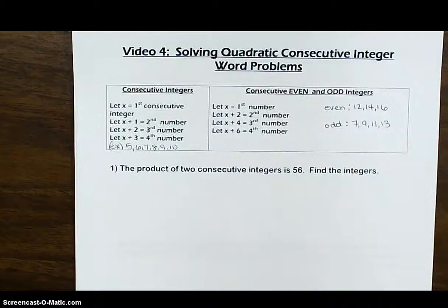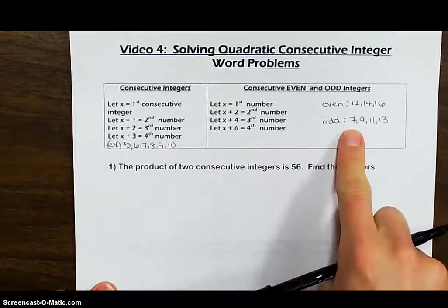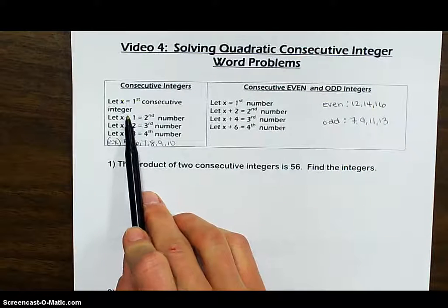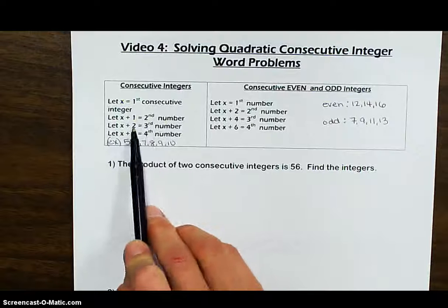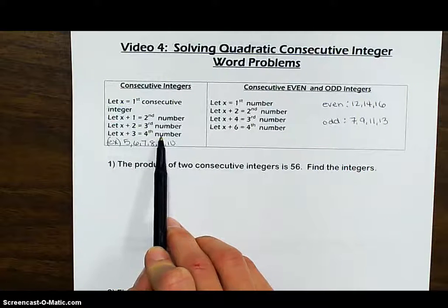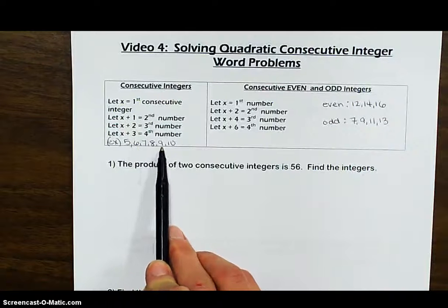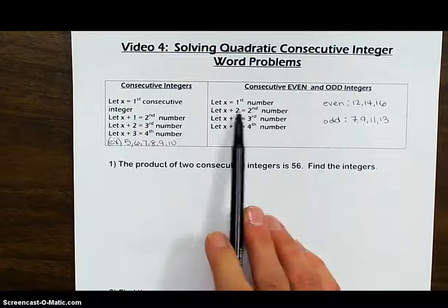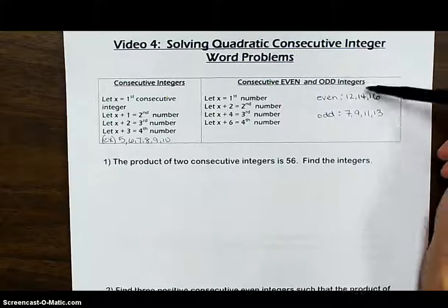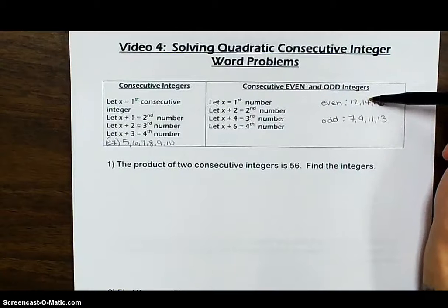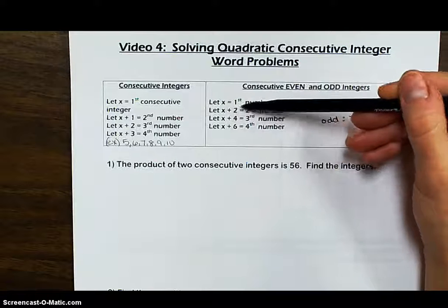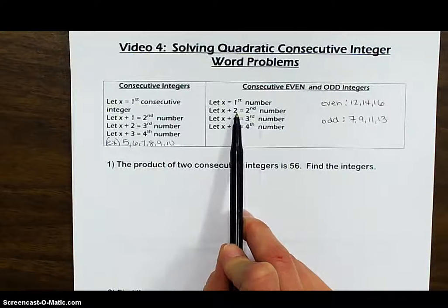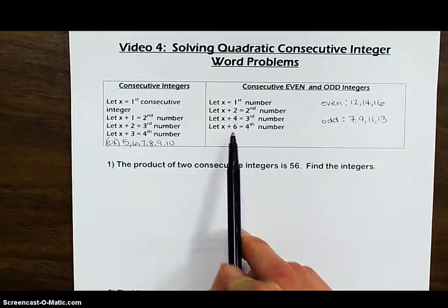To set up a word problem, we figure out let statements. For consecutive integers: let x equal the first, let x plus one equal the second, let x plus two equal the third, and x plus three equal the fourth — adding one each time. For consecutive even and odd integers, you add two each time: x, x plus two, x plus four, x plus six.